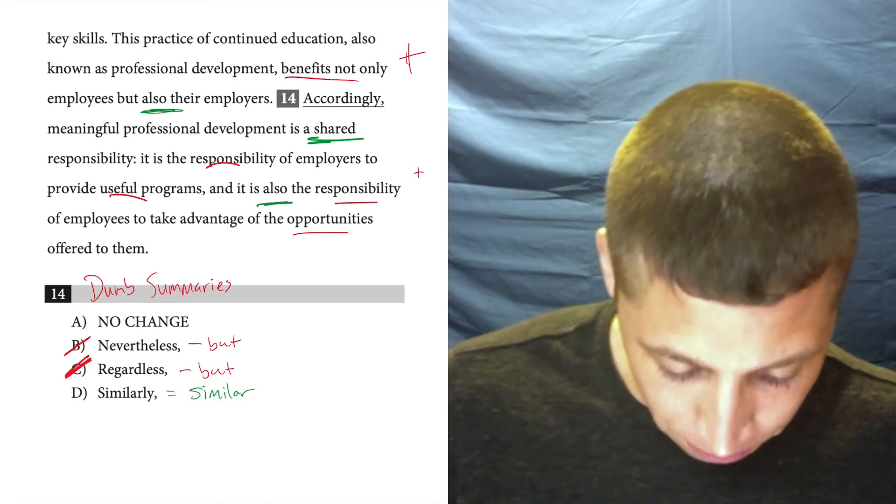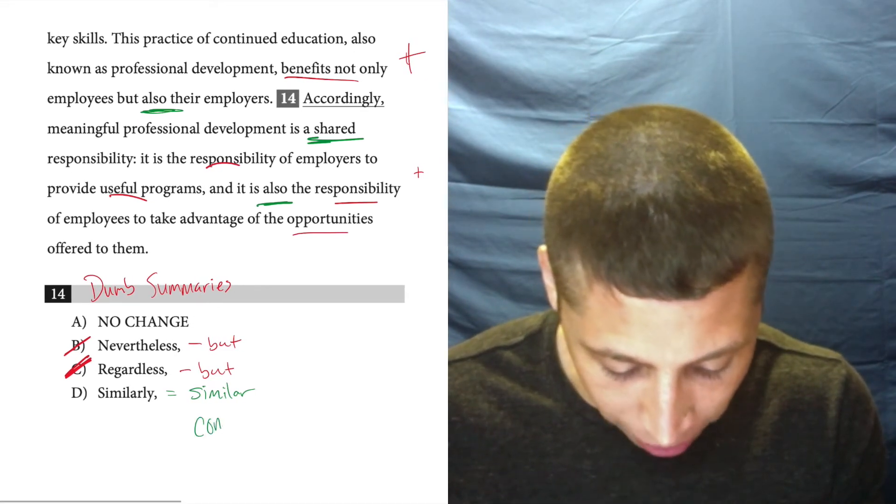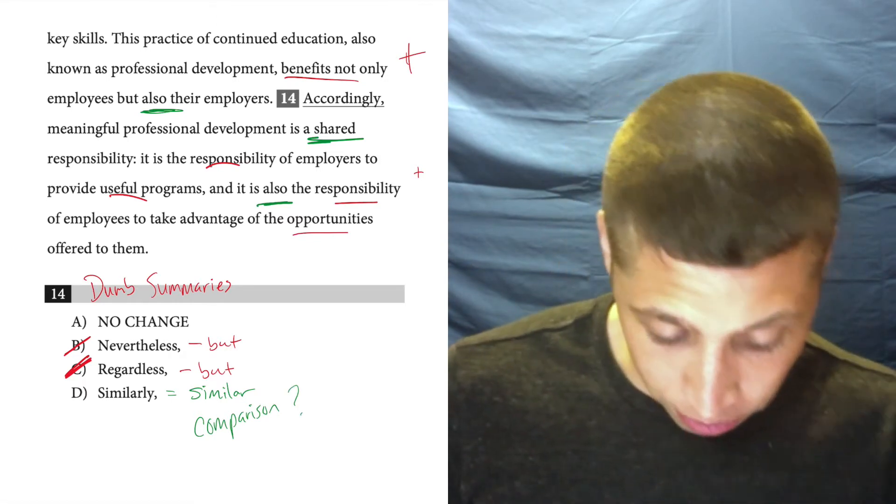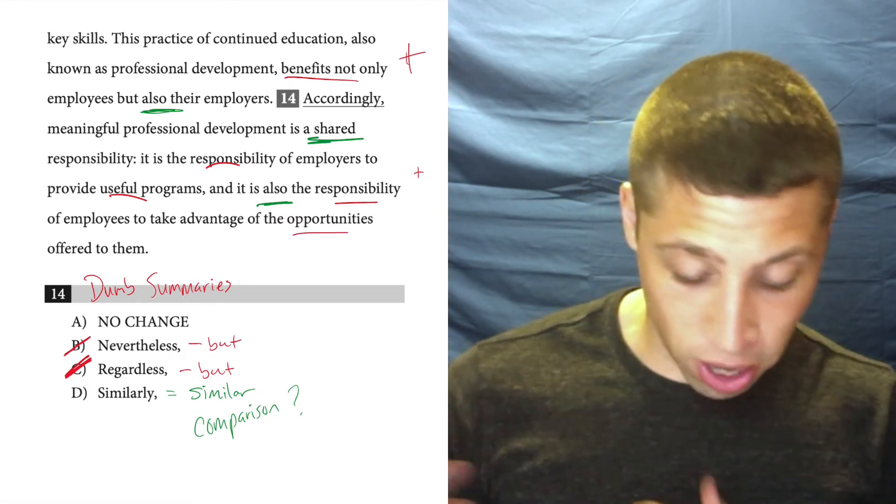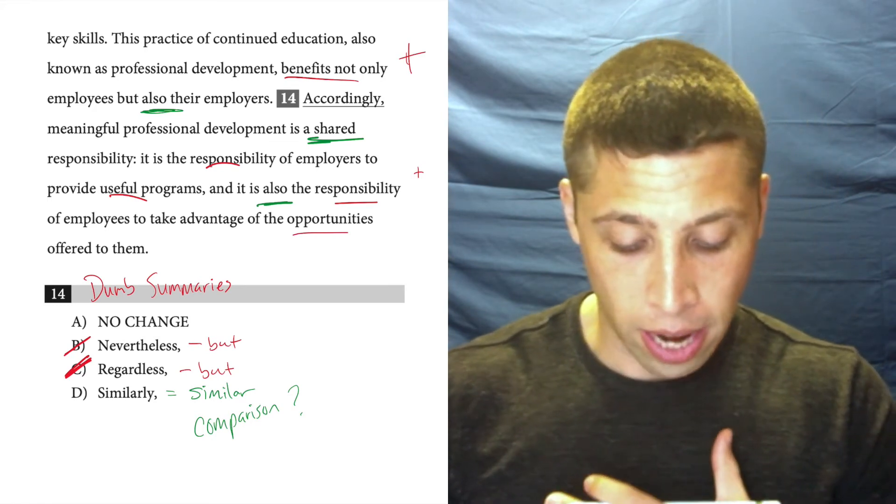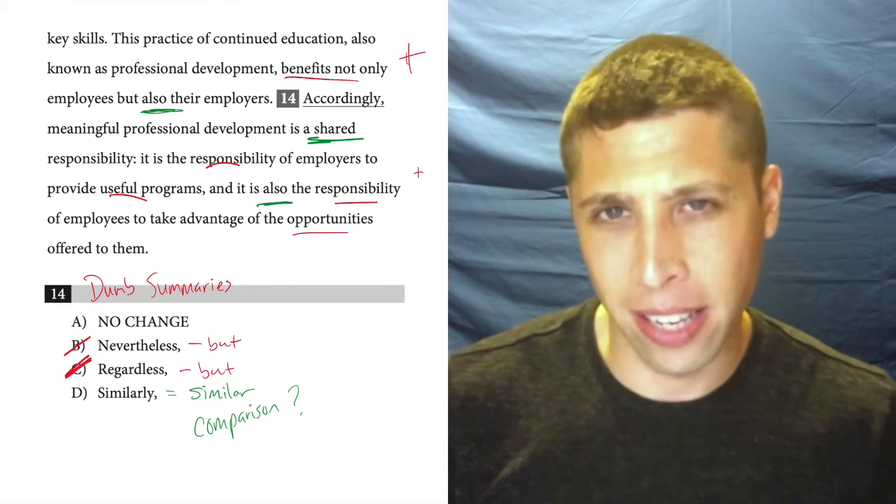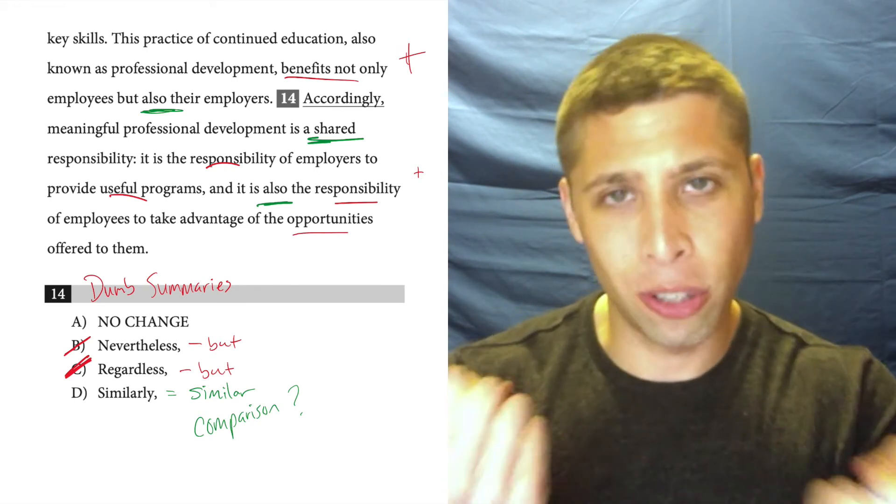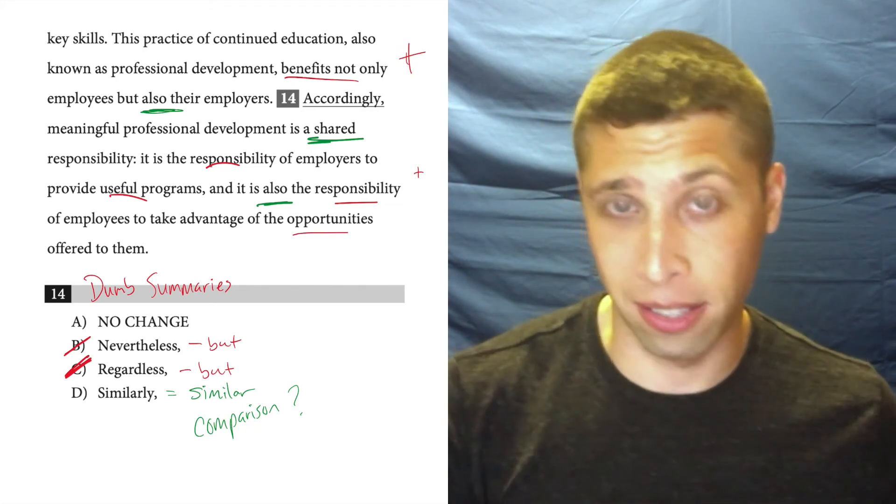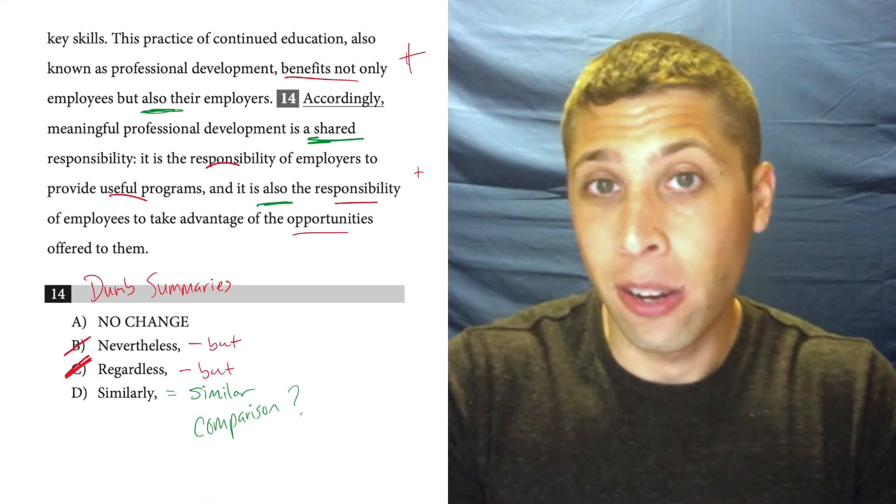We might not be able to define the word accordingly, but we know what similarly means. It means we're saying things are similar, right? Like it's a similar situation. So in this case, look, are we saying, are we making some sort of an analogy or a comparison? Well, not really, right? So we're talking about things being shared. There's benefits for both employees and employers. And then it kind of continues that thought and says, yeah, they're shared. It's not a new idea. They're not comparing two ideas and saying that they're similar. They're talking about the same idea in two sentences.